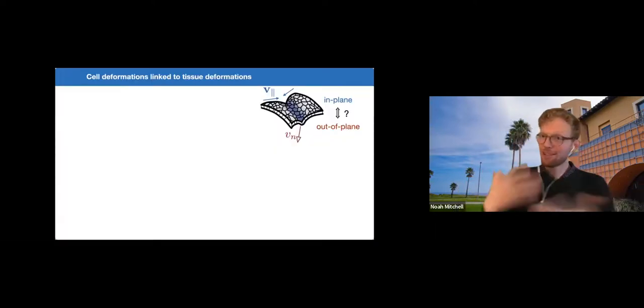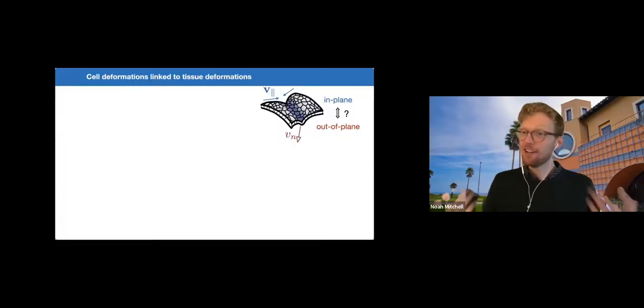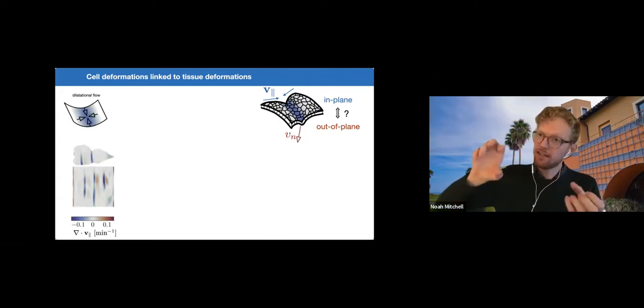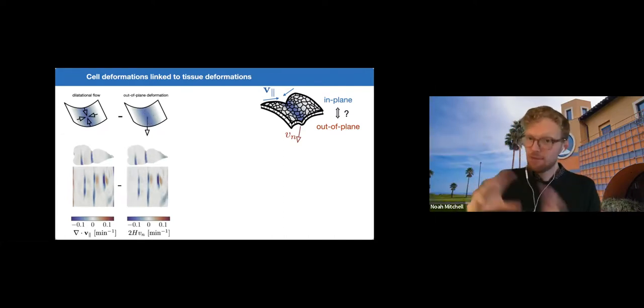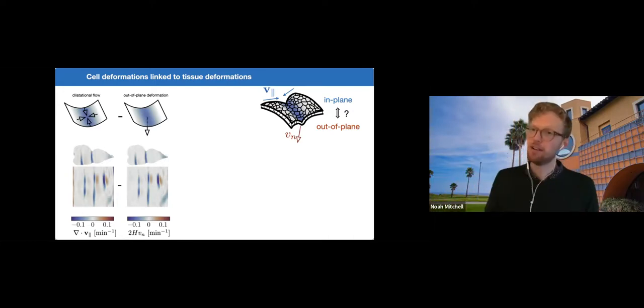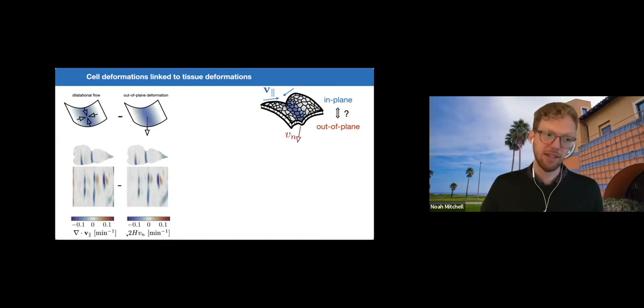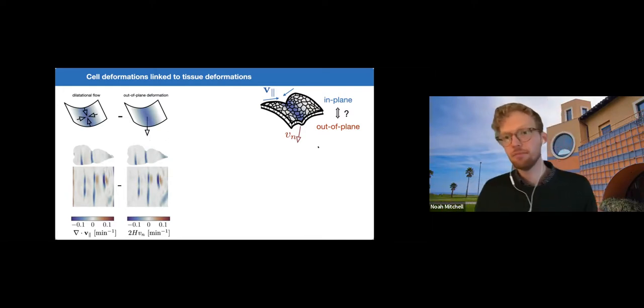So despite the complex swirling motions that we were just seeing, there is actually a simple relation here. The folding onset of these constrictions is accompanied by sinks in the tangential velocity field. And strikingly, this in-plane motion looks very similar to the out-of-plane motion coupled to mean curvature. So this is h here is the mean curvature of the surface, and vn is the motion in the normal direction, out-of-plane direction.